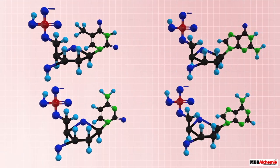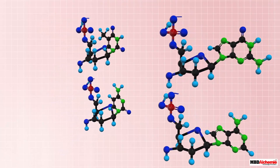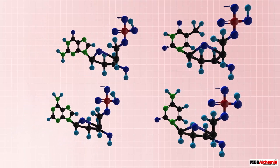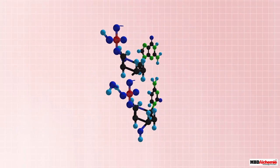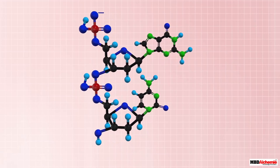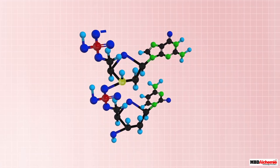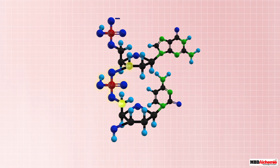All nucleotides of DNA share the pentose and phosphate group, but differ in their nitrogenous base. Since there are four different bases, there are four types of nucleotides in DNA. Any two nucleotides can join by forming a bond between the third carbon of the pentose of one nucleotide and the phosphate group attached to the fifth carbon of the pentose of the other, forming a dinucleotide.